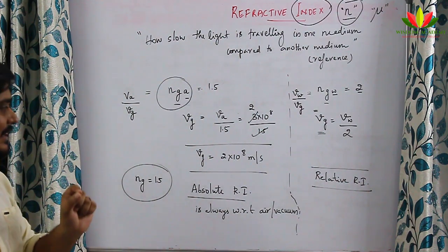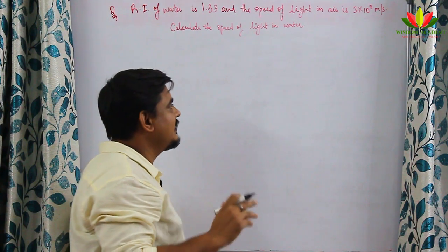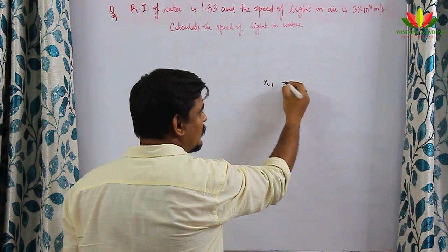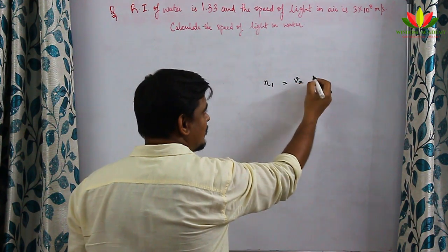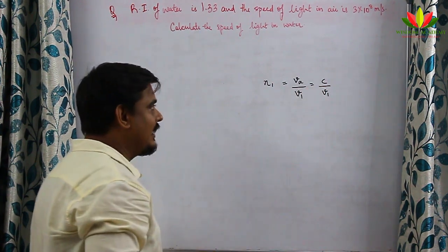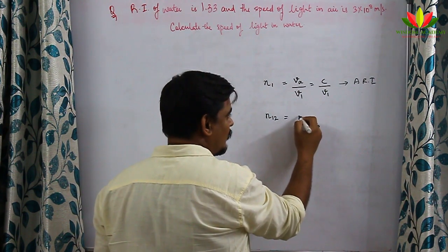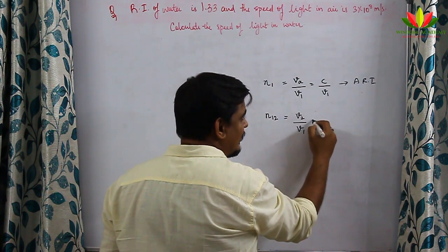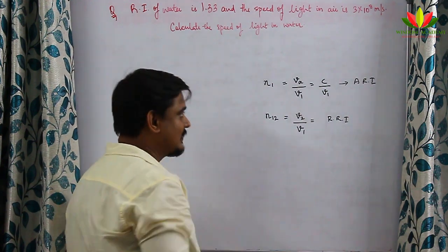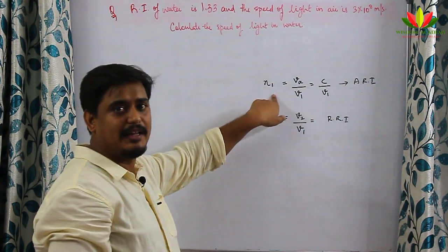Relative refractive index is velocity of light in one medium to the velocity of light in another medium. Absolute refractive index of medium 1: n1 = c / v1. Relative refractive index n12 = velocity of light in medium 2 / velocity of light in medium 1. In the relative case, the second medium's velocity is in the numerator.